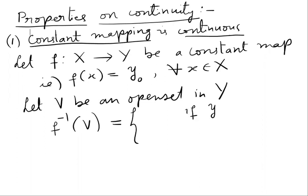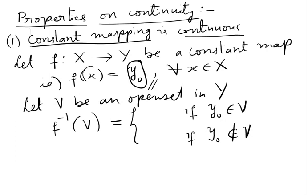Consider f inverse V. This f inverse V will have two options. One, if this constant y naught belongs to V, and the second option is if y naught does not belong to V. If y naught belongs to V, then all the points are mapped to y naught, so f inverse V will be X. And if y naught does not belong to V, then no points are mapped to y naught, so f inverse V is the null set.